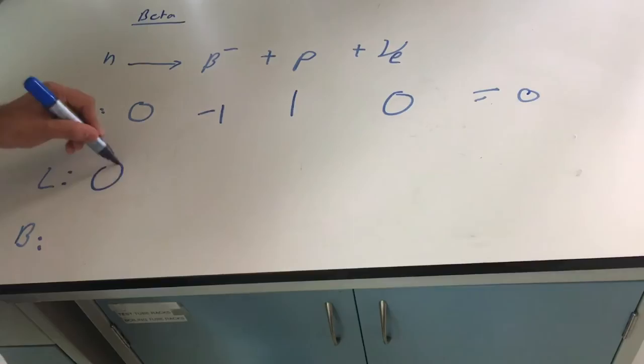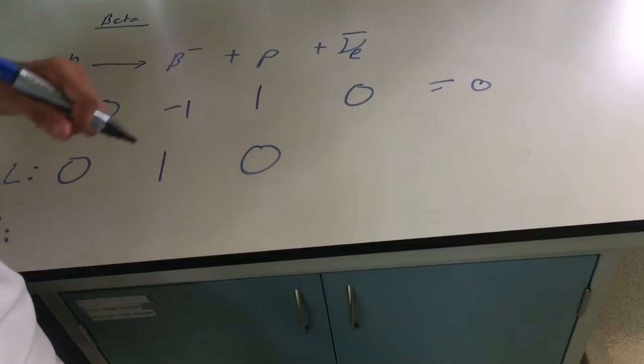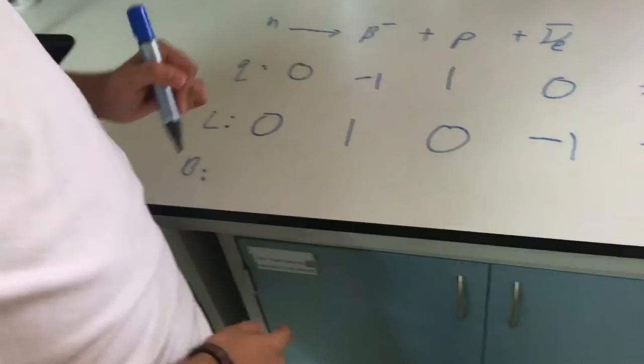For a lepton number, a neutron is not a lepton, so that's zero. A beta minus particle is essentially an electron, so that has a lepton number of one. A proton is not a lepton, so that's zero. And an anti-neutrino is an anti-lepton, so it has minus one. And if we equate this, we also get zero, proving that this is conserved.